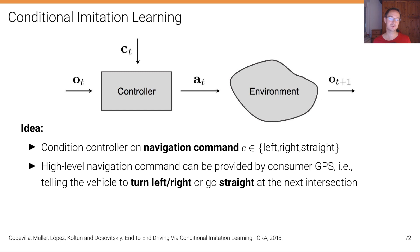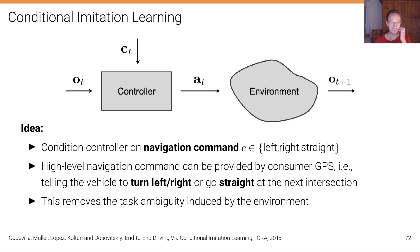This high-level navigation command is relatively cheap to obtain because modern GPS navigation systems already provide it — they tell us what to do at intersections. This is also an input signal that human drivers need when unfamiliar with a city. We can use a standard consumer GPS; it doesn't need HD maps. Traditional maps that tell the vehicle to turn left, right, or go straight at the next intersection are fine, and this completely removes the task ambiguity introduced by the environment.